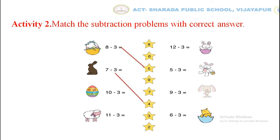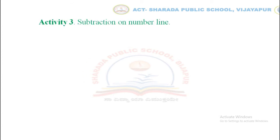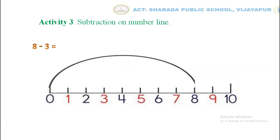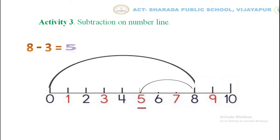Our next activity is activity number 3: subtraction on number line. The question is 8 minus 3. We have to do subtraction on the number line. Draw a line from 0 to 8 as shown. Now draw a line 3 steps back from the number 8 as shown. The answer is 5. That is, 8 minus 3 equals to 5. Children, solve the rest of the problems yourself.